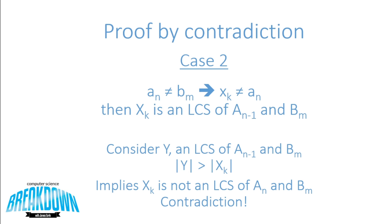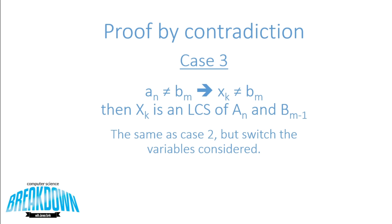For case three — the symmetric proof — A and B are not equal in their last characters, and the last character of our LCS is not equal to B of M, the last character in B. We can then say X of K is an LCS of A at N and B of M minus one. This proof is the exact same as case two but with the variables switched. And now we're done.